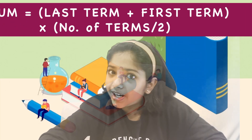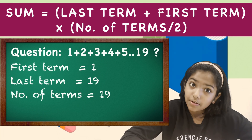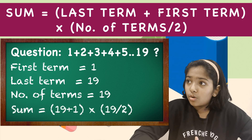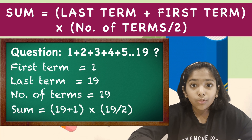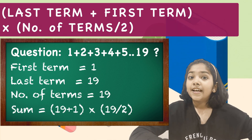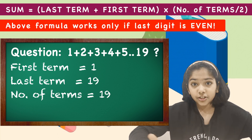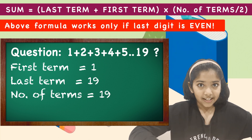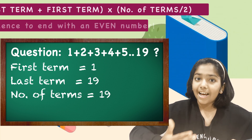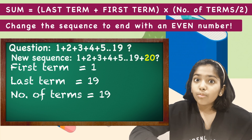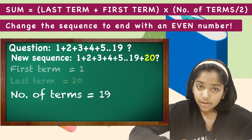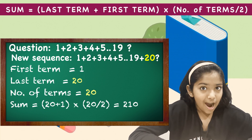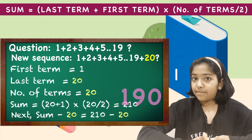Let's see if our formula works. First term is 1, last term is 19, number of terms is 19. So, 19 plus 1, multiplied by 19, divided by 2. Wait — if we do 19 divided by 2, it will become a decimal. So we cannot do it. The formula works only if the last term is even. So we need to make the last term, which is 19, even. To make the last term even, we can add 20. Now we already know the formula. The sequence of 1 to 20 using our formula gives 210. Now we just have to subtract 20, which gives us 190.